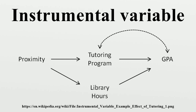However, what if the tutoring program is located in the college library? Proximity may also cause students to spend more time at the library, which in turn improves their GPA. Using the causal graph depicted in figure 2, we see that proximity does not qualify as an instrumental variable because it is connected to GPA through the path proximity → library hours → GPA. However, if we control for library hours by adding it as a covariate, then proximity becomes an instrumental variable since proximity is d-separated from GPA given library hours.